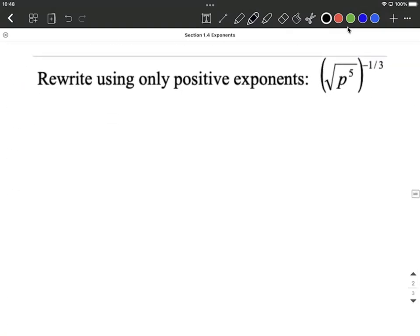What about we went to negative exponents, what about rewriting using positive exponents? Now this one is kind of a doozy of a problem. Because we have a square root involved, we have a negative one-third on the outside, we have p to the fifth power in there. So what I would probably do first is go ahead and just rewrite that square root as an exponent.